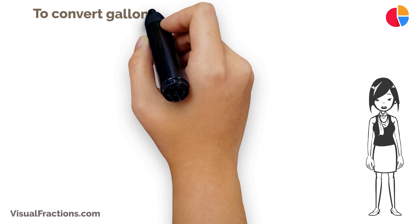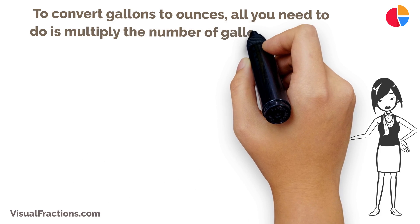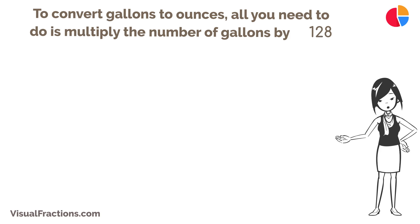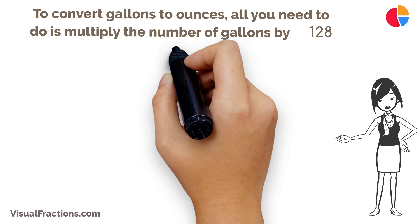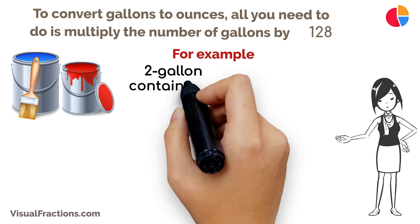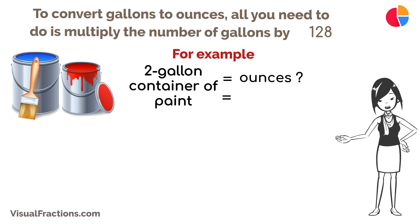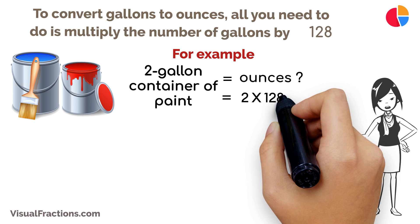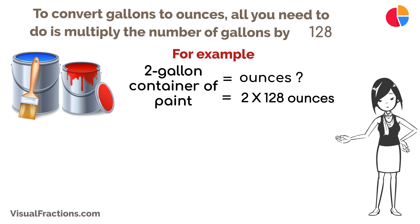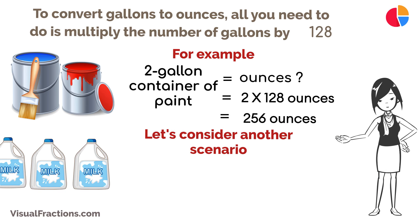To convert gallons to ounces, all you need to do is multiply the number of gallons by 128. For example, if you have a two-gallon container of paint and you want to know how many ounces it contains, simply multiply two gallons by 128 — that's a total of 256 ounces.